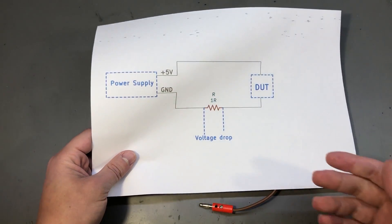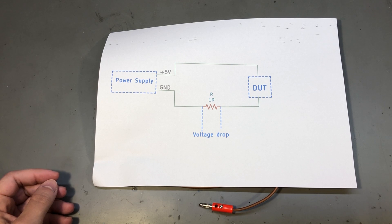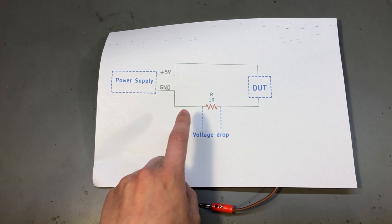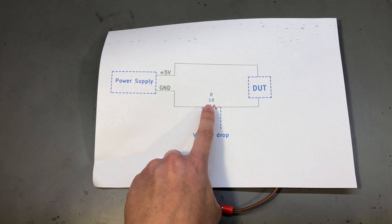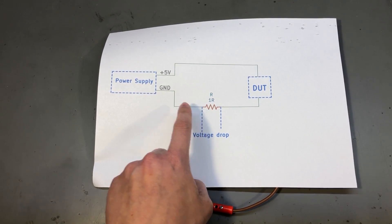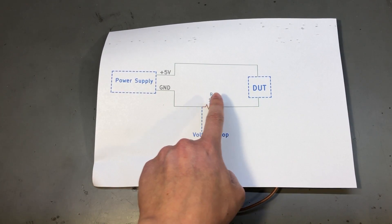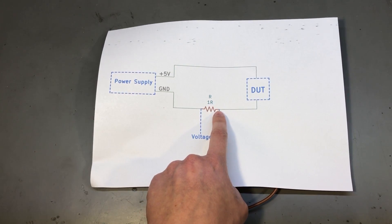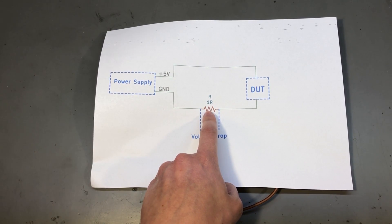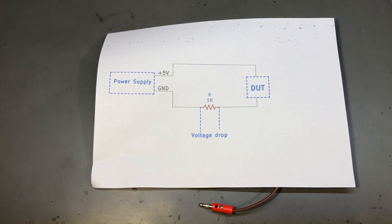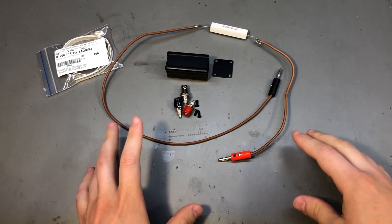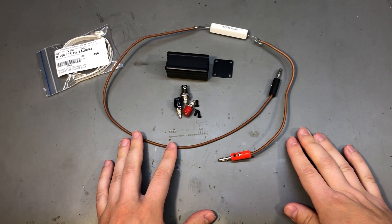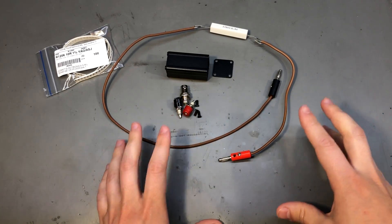Such a circuit will of course have its limitations. For example, it won't work very well when testing low voltage, low power devices because our resistor will introduce a burden voltage which will drop our supply voltage to the device under test. This is also not an isolated measurement, so it might not be safe to use this method when connecting with higher voltage circuits. There are still a lot of scenarios where you could use this successfully on the electronics workbench, so it might be worth building something a bit nicer.